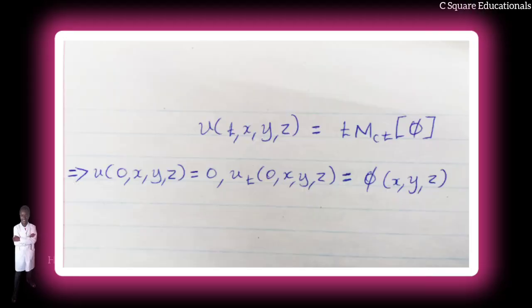And it follows as in the equations, u(0,x,y,z) = 0, u_t(0,x,y,z) = φ(x,y,z).